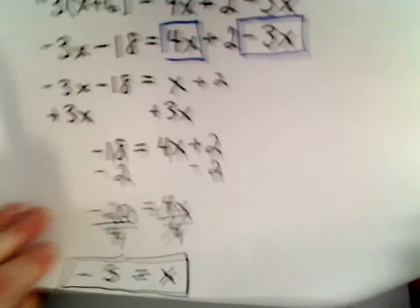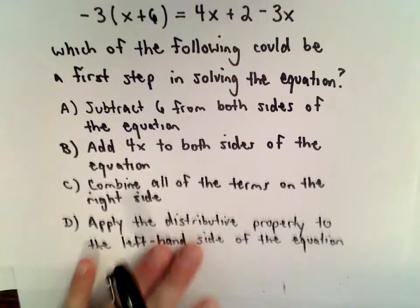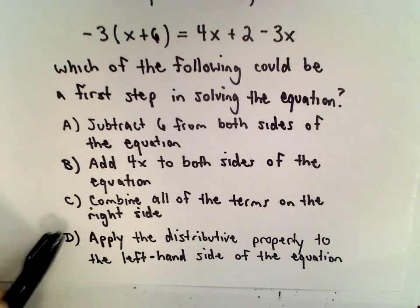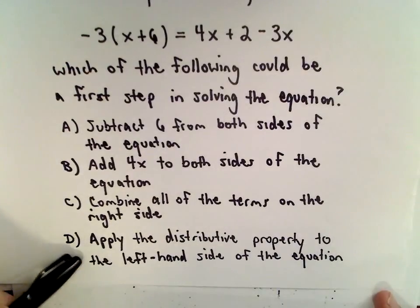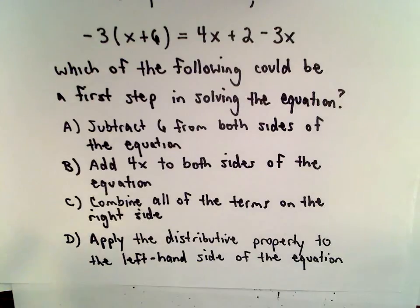Of course, the problem didn't ask for that, but it never hurts. Might as well go ahead and go through it all so you can see the whole process. In this case, answer choice D would be the correct answer. We would apply the distributive property to the left-hand side of the equation. That would certainly be a good and useful first step.